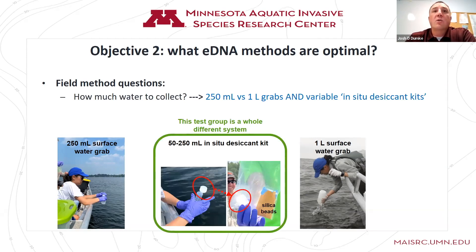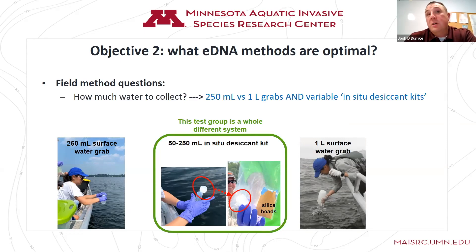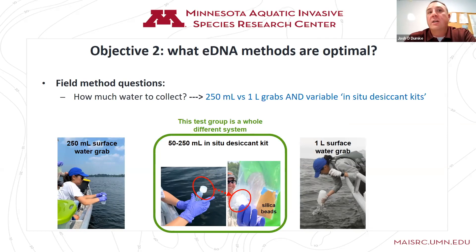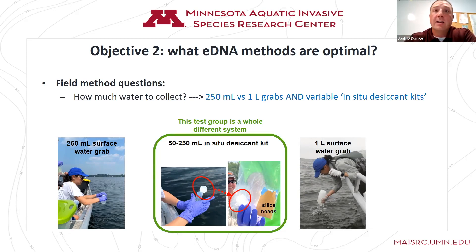We also tested variable in-situ desiccant kits — a totally different system where you filter water on site through a syringe with a 25mm diameter filter housing. After filtering to the point of clogging — anywhere from 50 to 250 milliliters — you drop that filter housing into a baggie with silica beads, meant to dry out the filter and preserve the DNA through desiccation. There are advantages: it's lightweight, doesn't require keeping anything cold, and no preservative is needed. But we don't know how well they work compared to a traditional water grab.